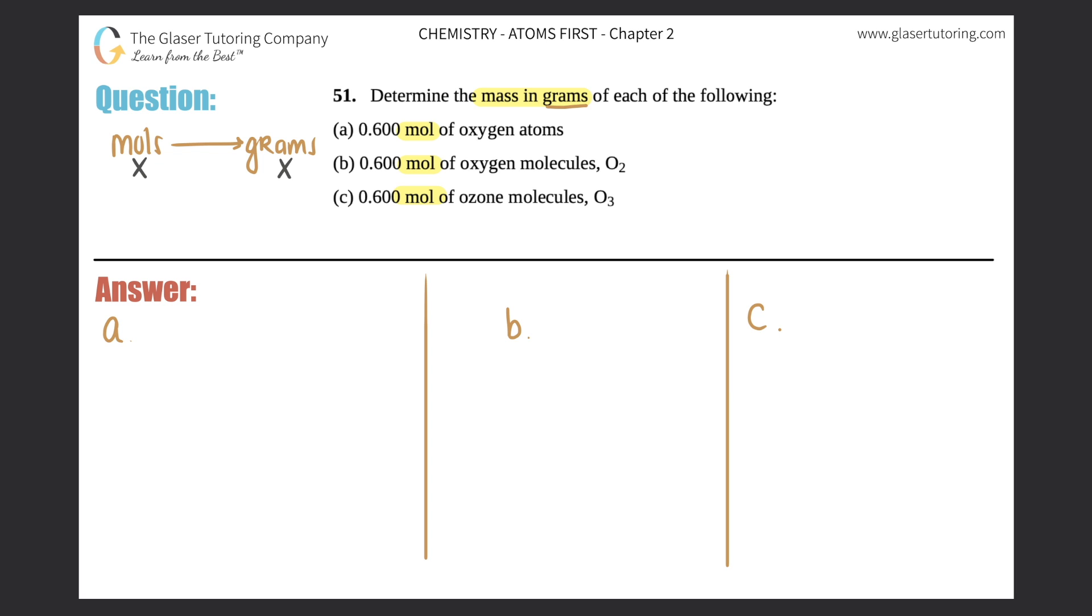You can always go from moles of something to grams of something in one step, and they have to be the same thing, because one mole of anything always equals the molar mass (MM) in grams.